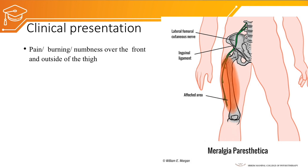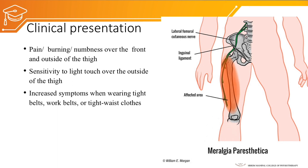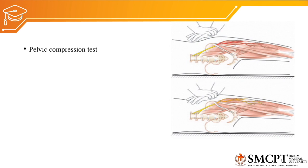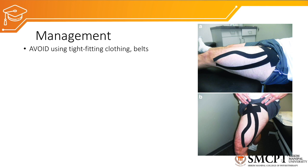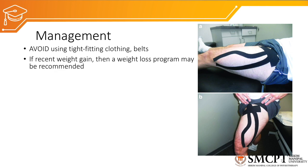Clinical presentations of meralgia paresthetica include sensory impairments such as pain, burning, and numbness over the front and lateral aspect of the thigh, and sensitivity to light touch over the lateral side of the thigh. Symptoms are increased when wearing tight belts, work belts, or tight waist clothes. On pelvic compression test, there will be a positive sign with increased numbness and paresthesia over the lateral aspect of the thigh. Tinel's sign will be present when we tap below the inguinal ligament, producing tingling and numbness over the lateral aspect of the thigh. Direct pressure with a finger over the inguinal ligament will also increase symptoms.